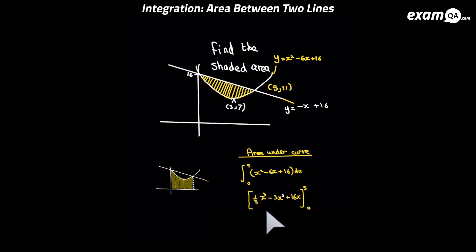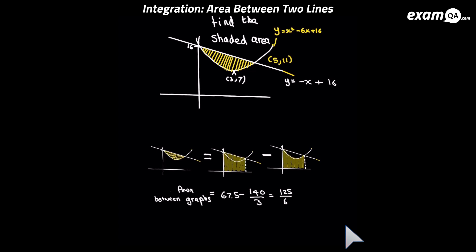Now we have to apply these limits 5 and 0. And remember we apply them by putting 5 into this new expression and we subtract that by putting 0 into the new expression. But of course we know if we put 0 in here we're just going to get 0 because everything's just going to disappear. And you can put this into your calculator and we get 140 over 3. Now to get that area between the graphs we simply subtract these areas we just worked out. And we get 125 over 6. And that's the area between the graphs, the shaded area.